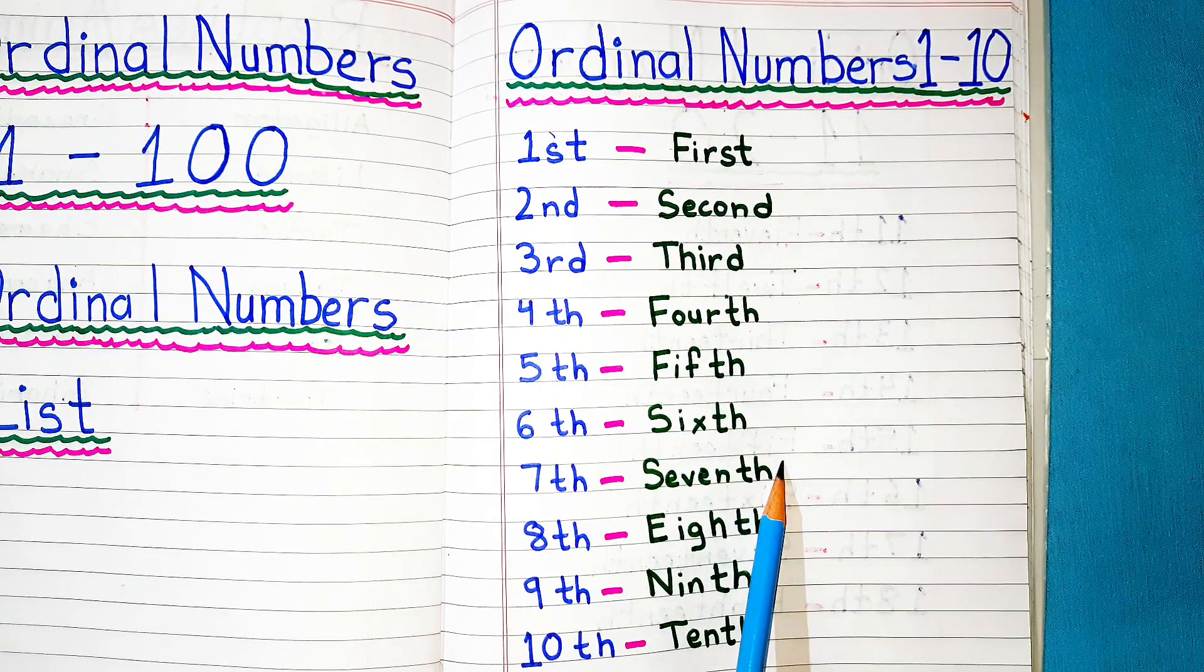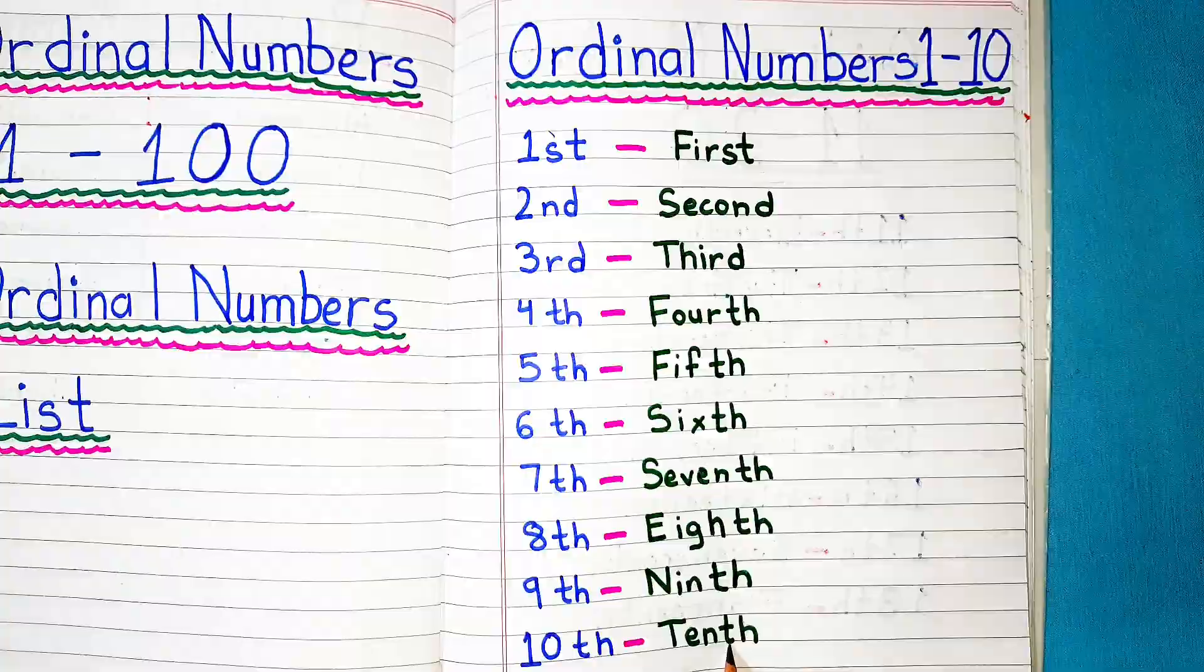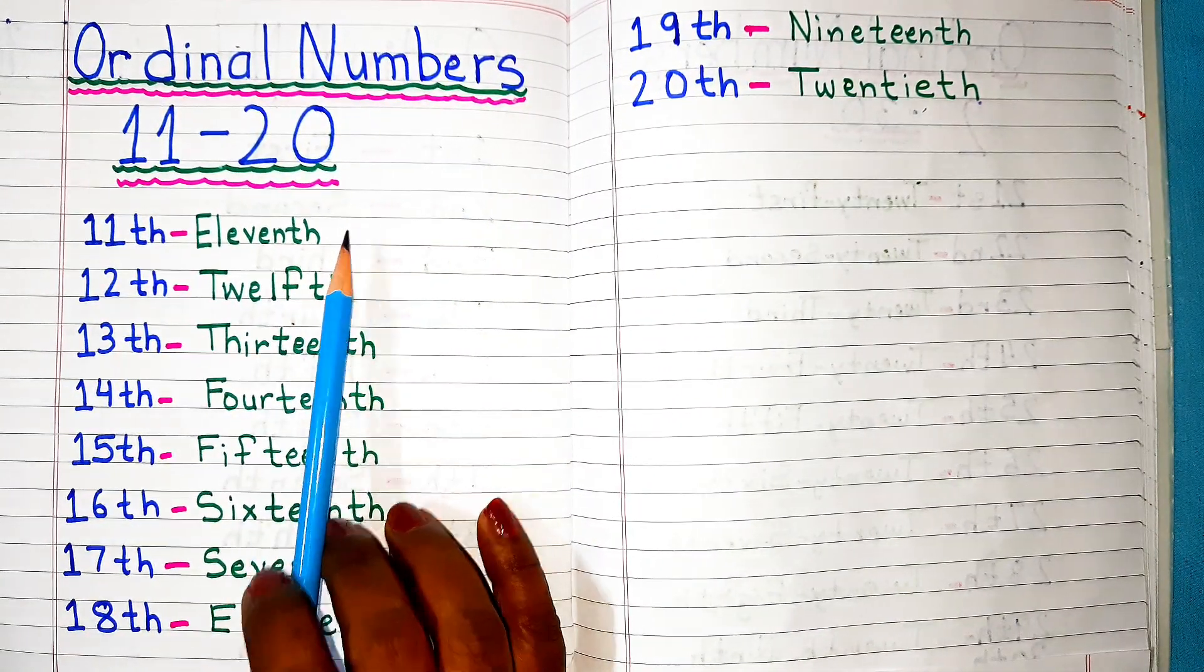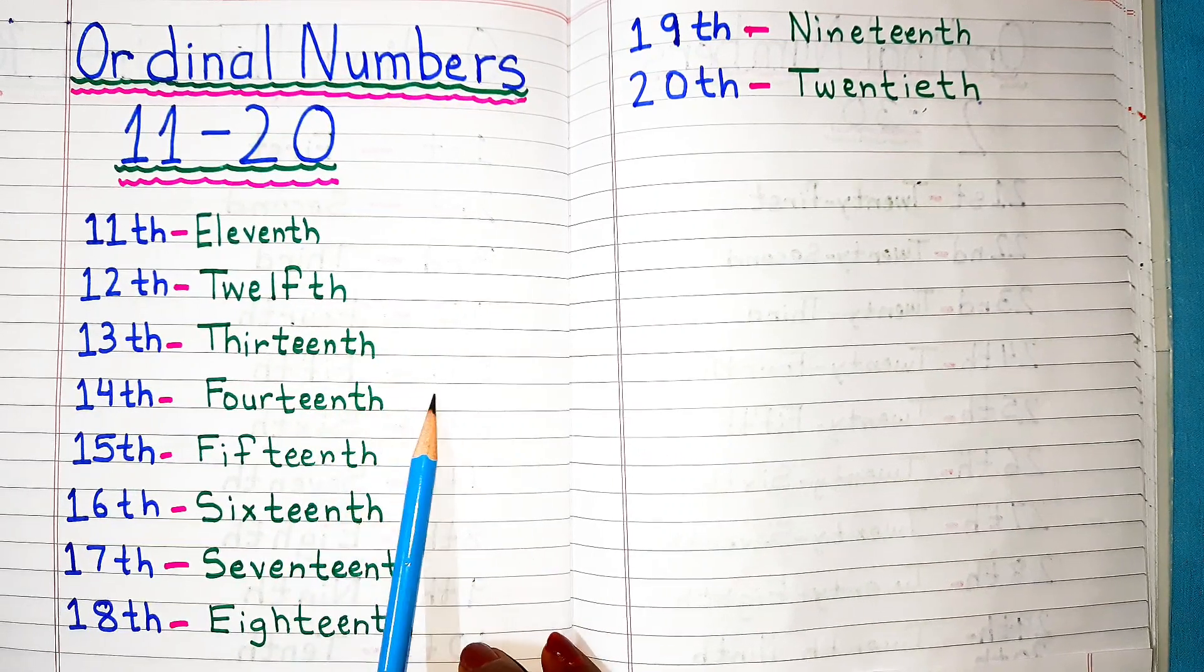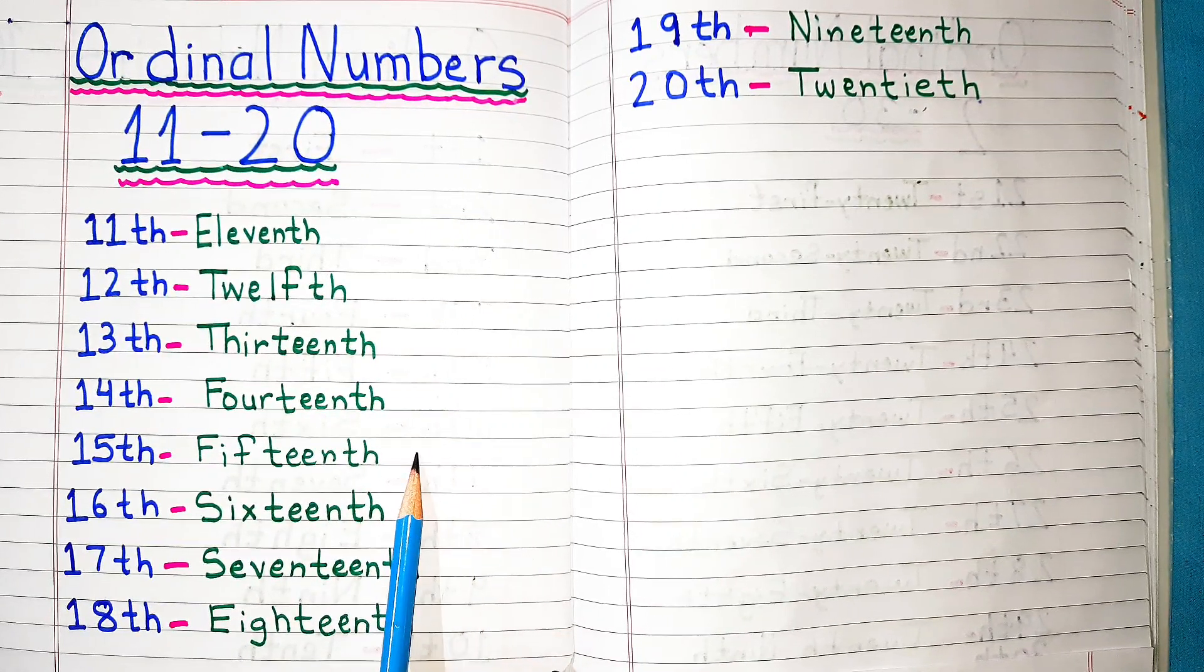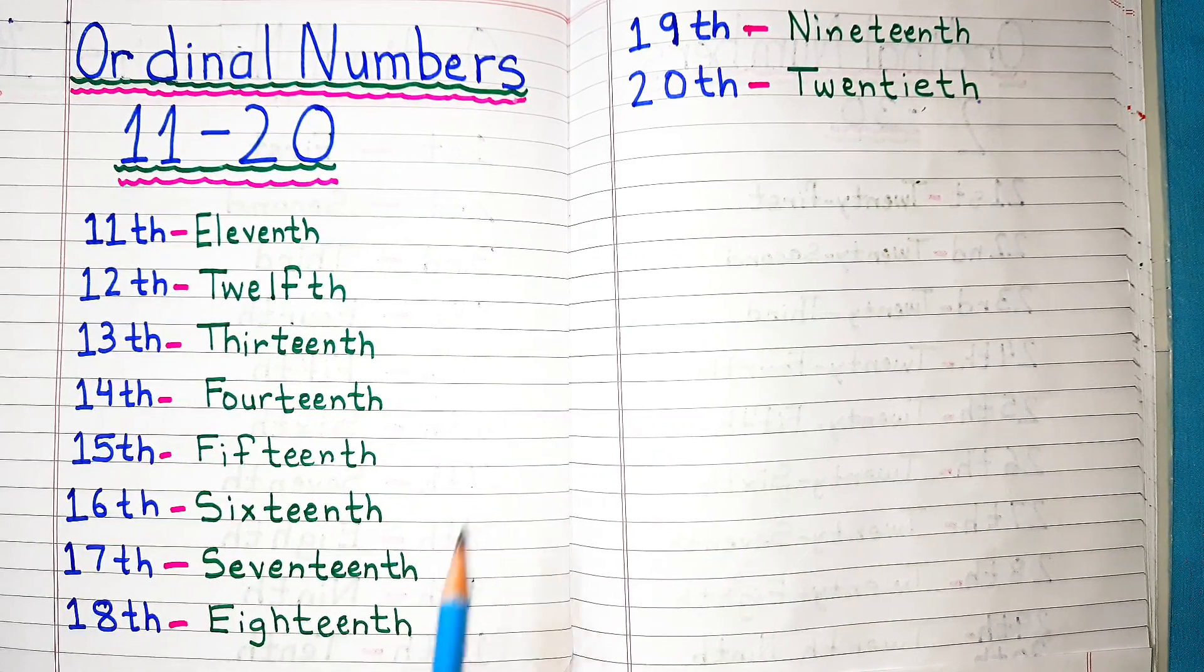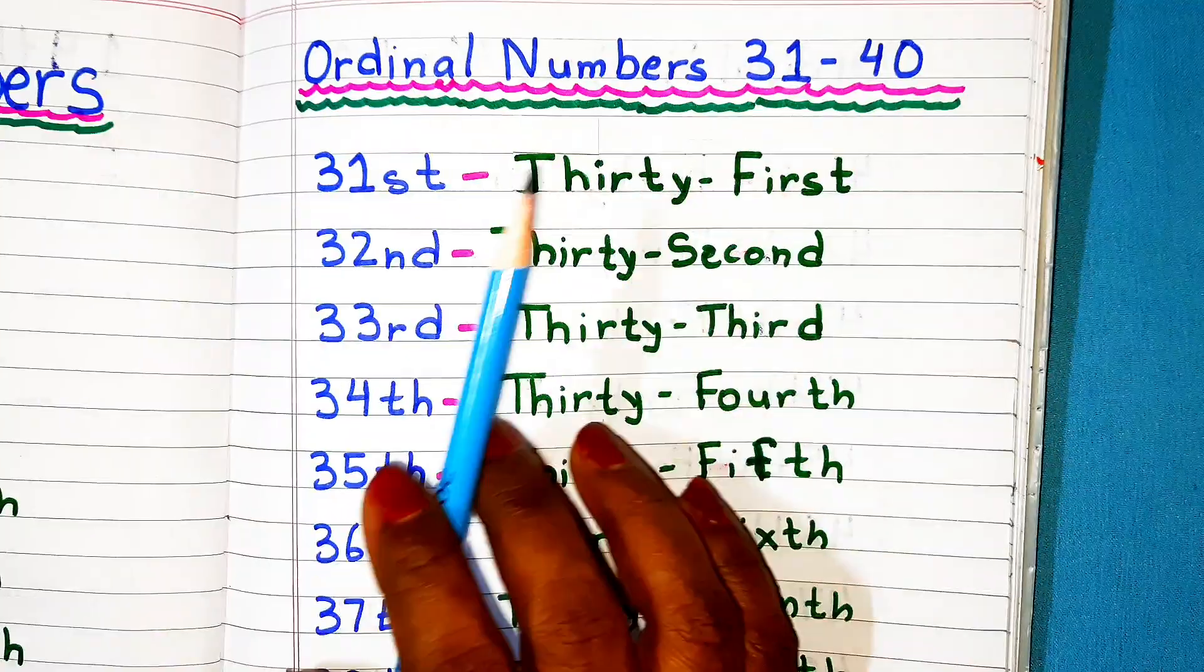Ordinal numbers 11 to 20: 11th, 12th, 13th, 14th, 15th, 16th, 17th, 18th, 19th, 20th.